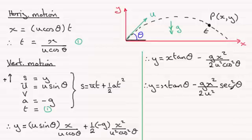But it's still not the only one, because we can adjust this last term. I'll show you. Let's just put y equals x tan theta down again, and then minus gx squared over 2u squared.